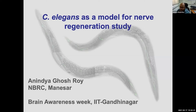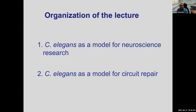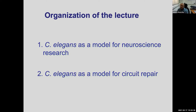I would like to divide the talk broadly into two parts. In the first part, since it's Brain Awareness Week, I will give a general introduction on how the C. elegans worm model is used in neuroscience research over the years, with a little historical perspective. That will serve as a primer for the second part, where I will talk about our lab's work and results. I've decided to focus on the bigger picture rather than details, but we can discuss more details at the end.